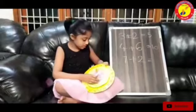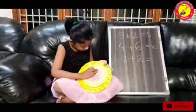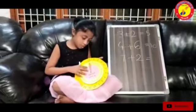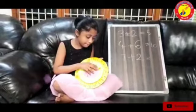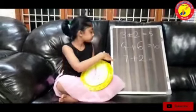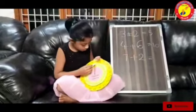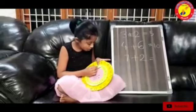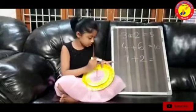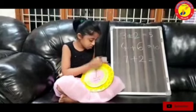The third problem is 7 plus 2. We have to move this arrow near 7. Here is 2, so we have to see where is 2 in this small circle. The 2 is here. The answer is 9, and 7 plus 2 is equal to 9.